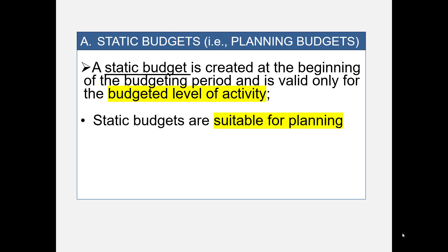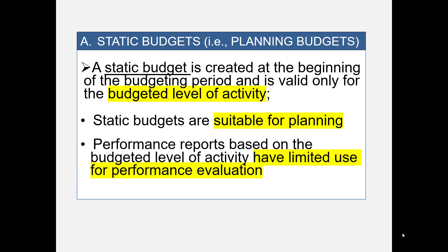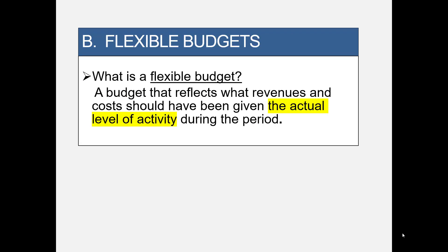Static budgets are suitable for planning, but they have very limited use for performance evaluation. So we prepare flexible budgets. A flexible budget is a budget prepared for the revenues and costs at the actual level of activity. You're going to use budgeted sales price and budgeted costs, but at the actual level of activity.